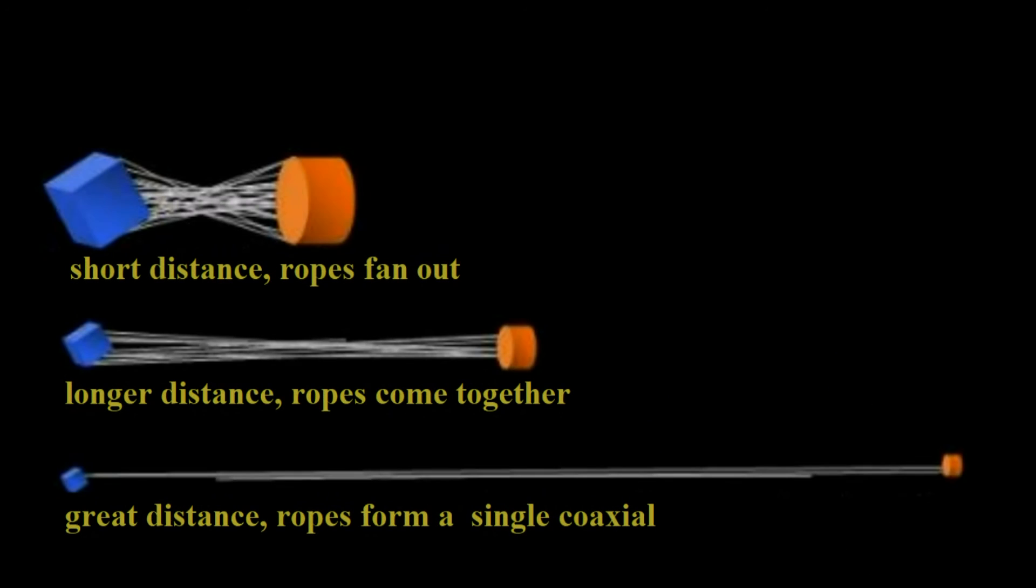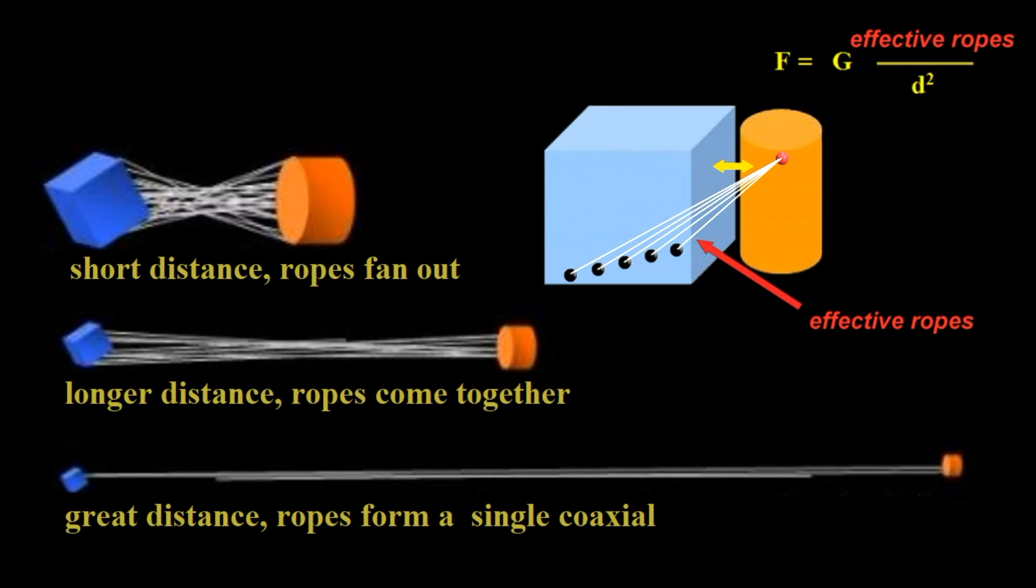Summarizing, at great distances, the ropes act as a single coaxial and gravity is weak. At short distances, the ropes fan out and act independently. The gravitational equation is a measure of the effective ropes that bind the number of units of mass contained by each object.